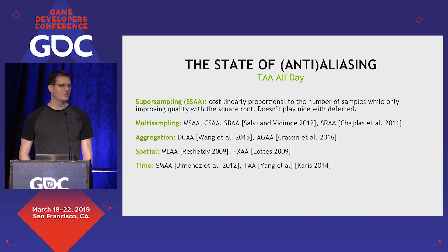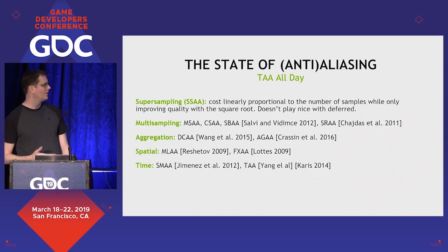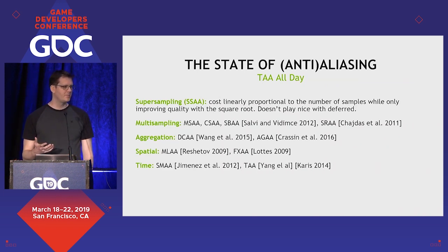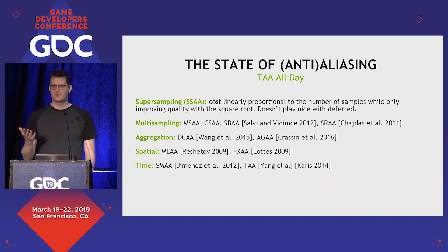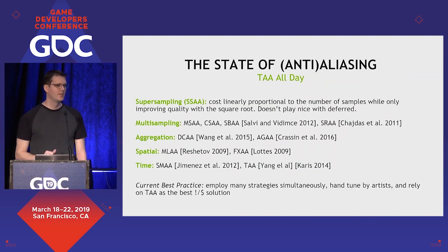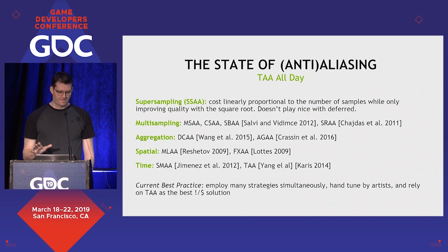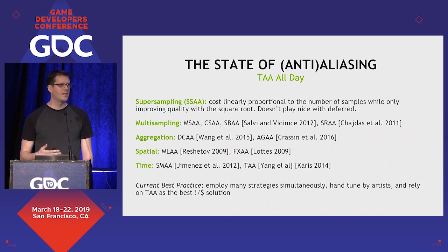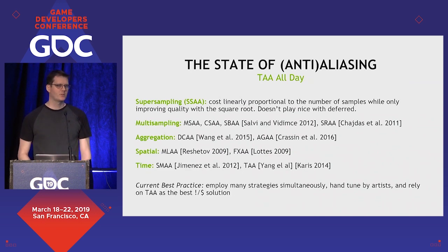There are many, many more types of anti-aliasing techniques that have been presented and used in games over the years. This is a very active area even today because it's a cornerstone problem for computer graphics. The current best practice is that people employ many of these strategies simultaneously, hand-tuning with artists' help. Ultimately, many games right now are relying on TAA — temporal anti-aliasing — for that best bang-for-buck solution, because it's not as expensive as supersampling or multisampling, and you get a pretty nice integration over time.